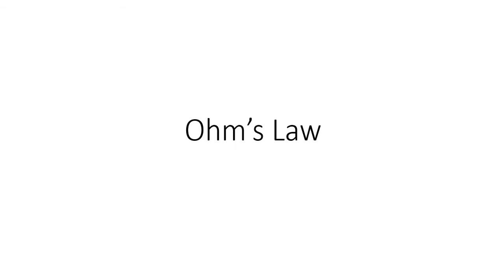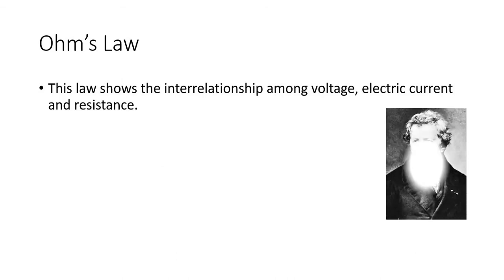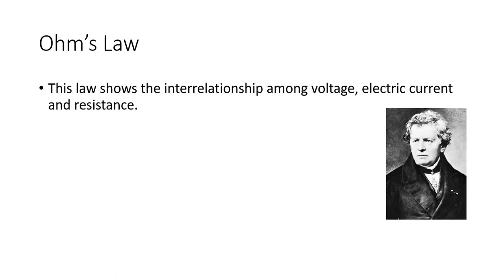Voltage, electric current, and resistance are the three important quantities in the field of electricity. According to this law, these three quantities are interconnected. The proponent of this law is George Ohm. To understand more about the concept of this law, let us first identify the symbols and the units that we should use in solving for these three quantities.